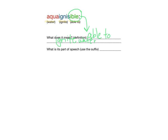So my brand new word, aqua ignisible — which is not a word in the dictionary, you can check it out — means able to ignite water. Or maybe I want to extend it a little bit: able to ignite in water. I'm allowed to add those few little words because it's my word. Because it ends in the suffix -ible, that suffix is one of the many suffixes you'll find that are adjective suffixes. So it's an adjective, which means when I'm using it in a sentence, I have to use the word aqua ignisible to describe something.